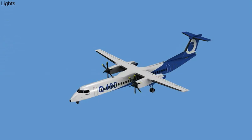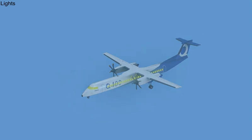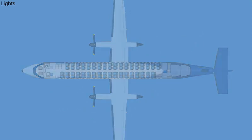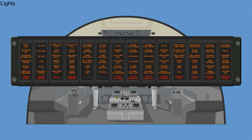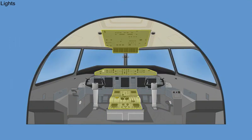The aircraft lighting system consists of exterior lights, flight compartment lights, cabin compartment lights, emergency lighting, and warning, caution, and advisory light systems.